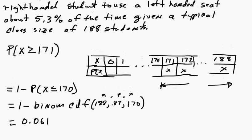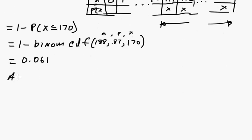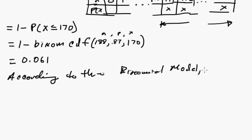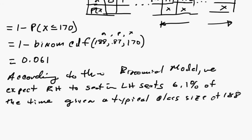That's slightly a little bit different. According to the binomial model we expect right-handers to sit in left-handed seats 6.1% of the time given a typical class size of 188.